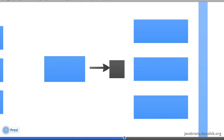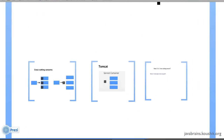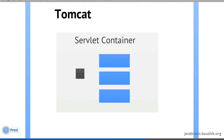That's the first concept. The second concept: Tomcat is a servlet container. When you write applications for the servlet container, there are two components where you normally write logic — servlets and filters. Servlets are usually where you write your business logic, and filters are where you typically write cross-cutting concerns. For example, if you want every servlet to log a message, you wouldn't write the logging code in the servlet — you'd write it as a filter and configure the filter to do the logging before the servlet is called.